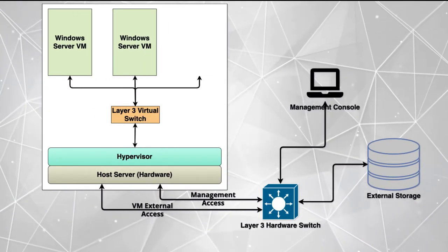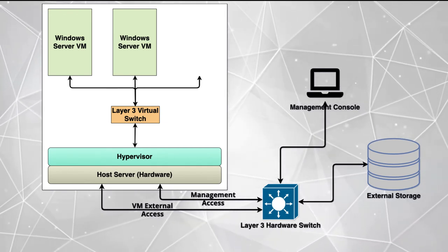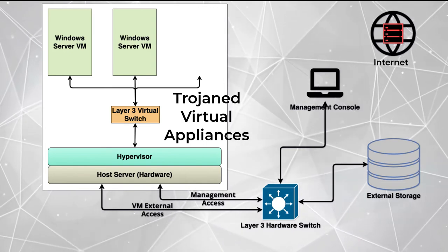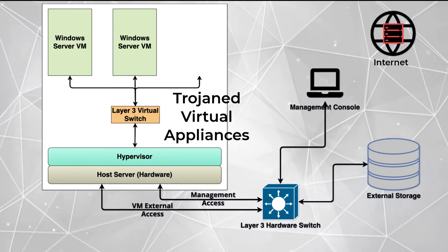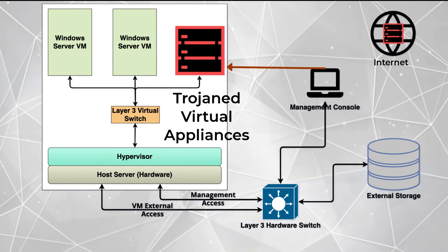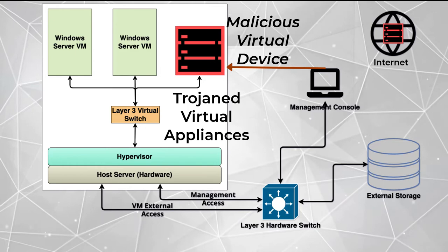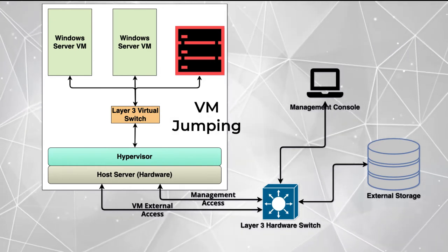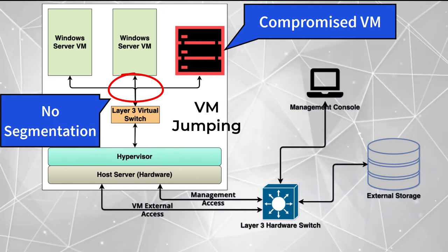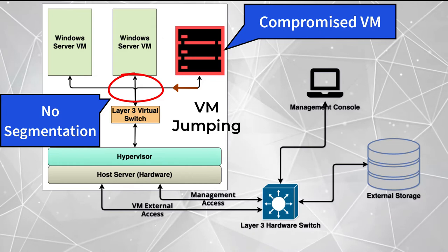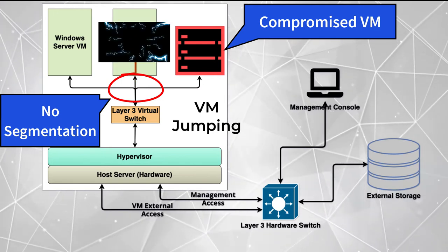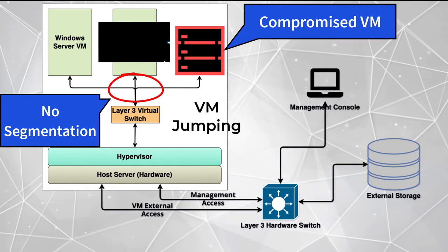According to the CISSP Common Body of Knowledge, there are two common attacks against virtual environments. The first is Trojan virtual appliances — malicious VMs created by threat actors, distributed via commonly trusted channels, and implemented by IT teams without proper safeguards, providing threat actors with entry points into cloud or on-premise environments. Another attack is VM jumping, which usually occurs because of misconfiguration of the virtualization environment, allowing traffic between VMs on the same host — traffic that enables a threat actor's payload to pivot from one compromised system to others. Risks associated with these and other attack vectors can be mitigated with the right controls.